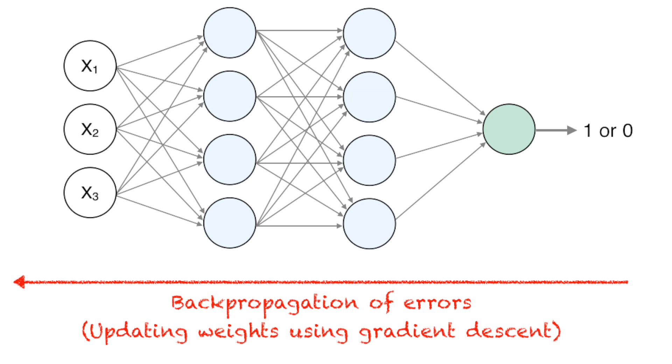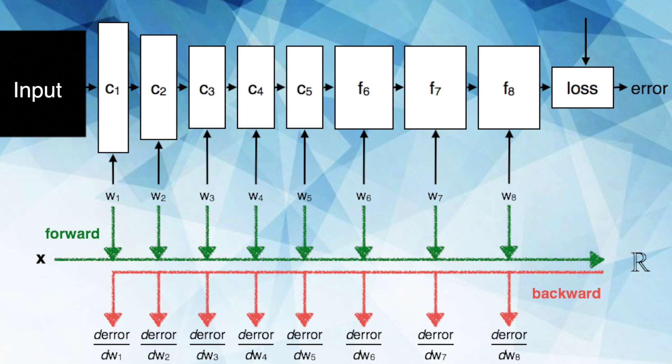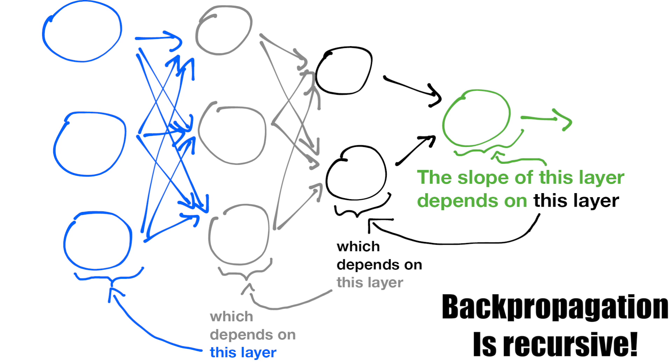It gives us a way of computing the error for every layer and then relating those errors to the quantity of real interest the partial derivative with respect to any weight in the network. We can use the chain rule to compute the partial derivatives that is the gradient of the error with respect to each weight. Backpropagation at its core simply consists of repeatedly applying the chain rule through all the possible paths in our network. Our ultimate goal in training a neural network is to find the gradient of each weight with respect to the output. We do this so that we can update the weights incrementally using gradient descent.